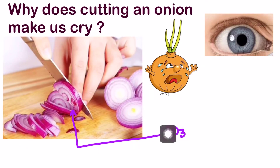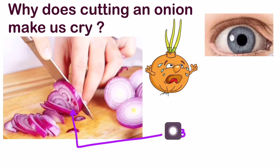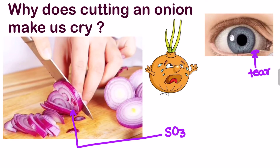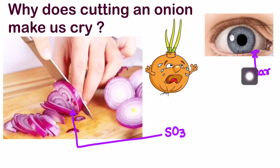Now when this SO3 gas comes in contact with the eye — our eye is basically covered with a thin film of water-based liquid called tears. There are tear glands where the tears are present. That water-based liquid contains water, and this tear is very useful in minimizing friction between the eyelids.